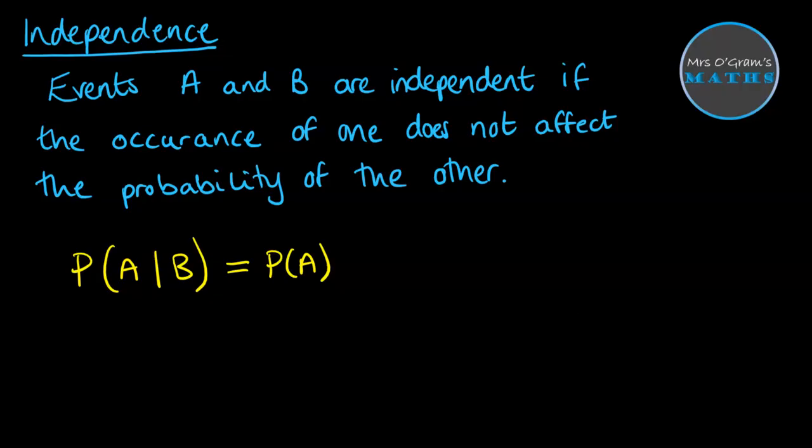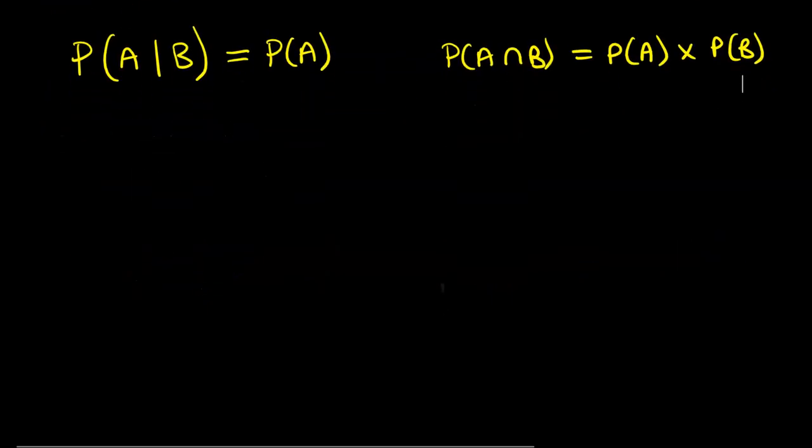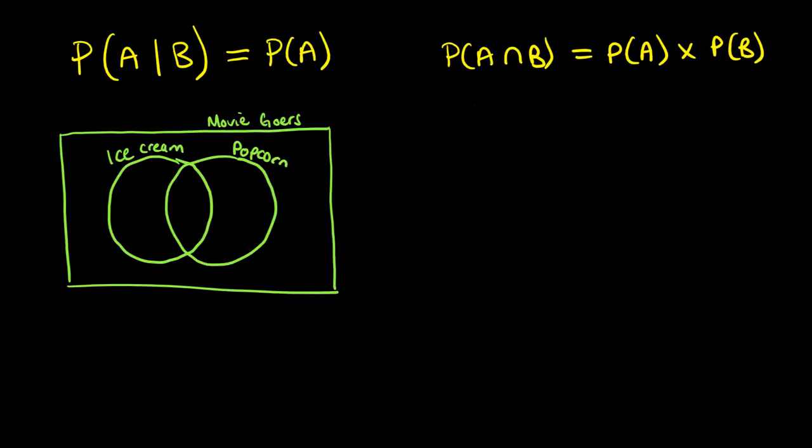The other thing that is also true is the probability of A intersection B is equal to the probability of A times the probability of B. So depending on the type of information you've got, you would use one of those formulae to prove whether two events were independent or not.